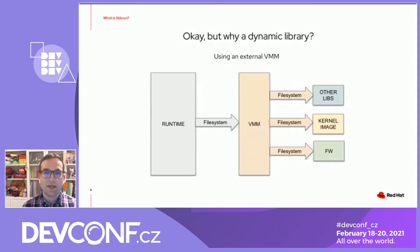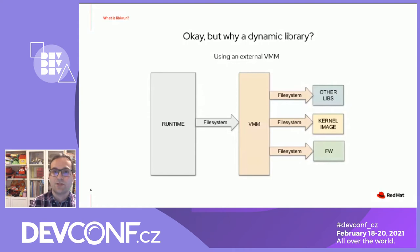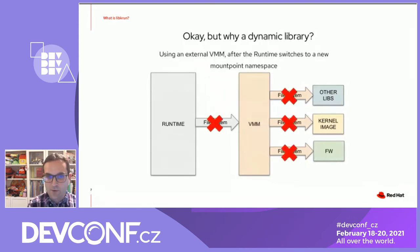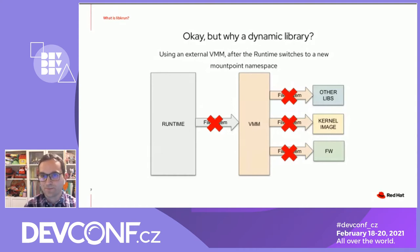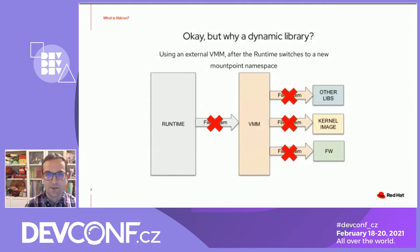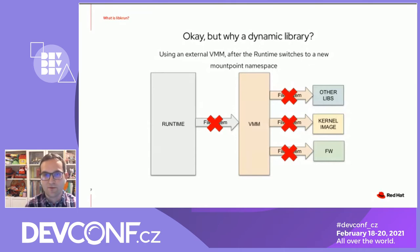This is not a problem unless the runtime intends to switch between contexts, which is something that OCI runtimes tend to do. If that's the case, and the runtime switches to a different context with a different mount point namespace, it's very likely that the runtime won't be able to find the virtual machine monitor executable through the file system anymore, nor any of its own dependencies. This means that the runtime will need to either avoid switching contexts — which is bad for security — or somehow carry the payload between different contexts, which can be complicated and won't be really efficient anyway.